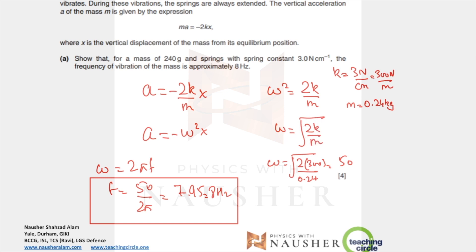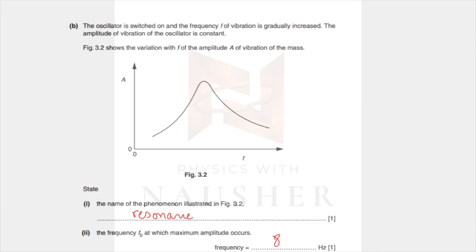The spring constant was 3 newtons per centimeter, converted to meters you get 300 newtons per meter. Mass was in grams, converted to kilograms. Plug the values in, you get 50. Put the 50 over here: 50 equals 2πf, frequency will be 7.95 or 8 hertz.